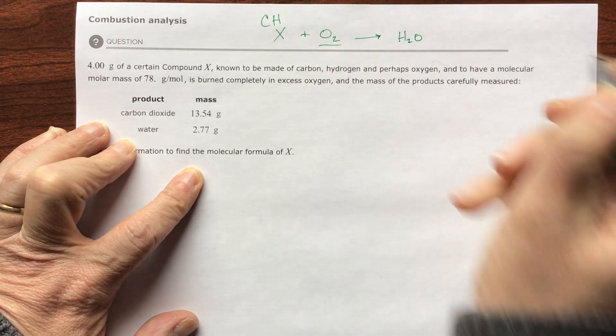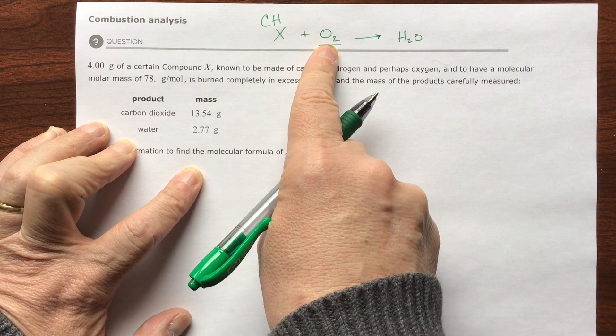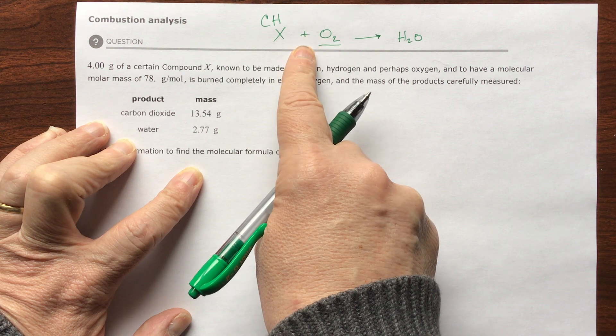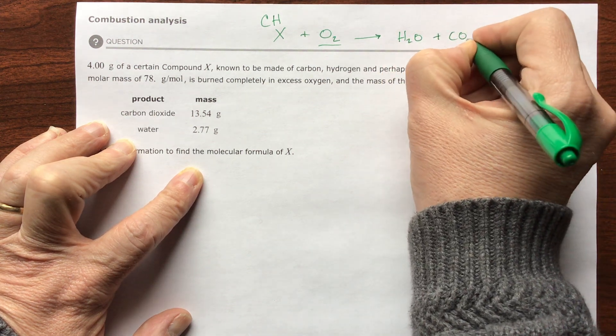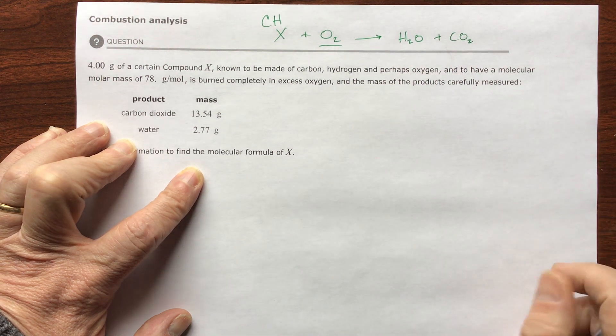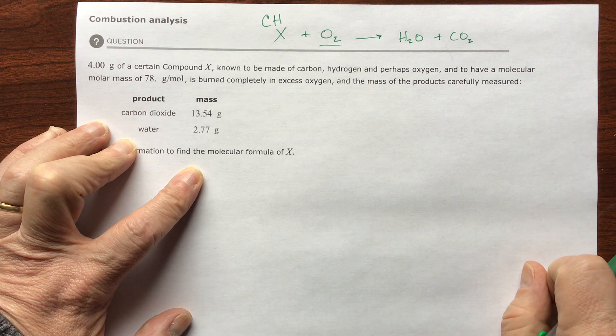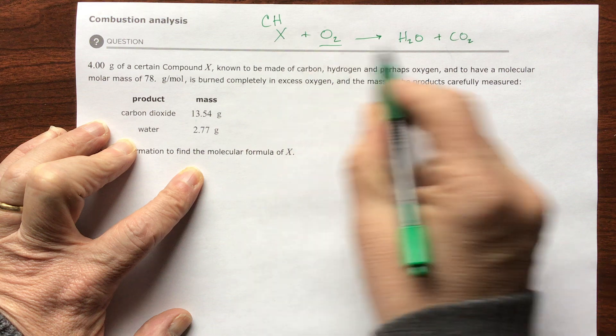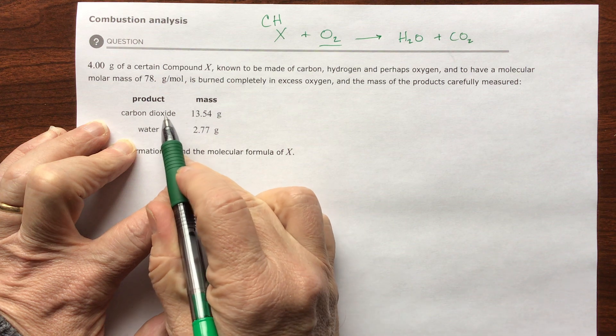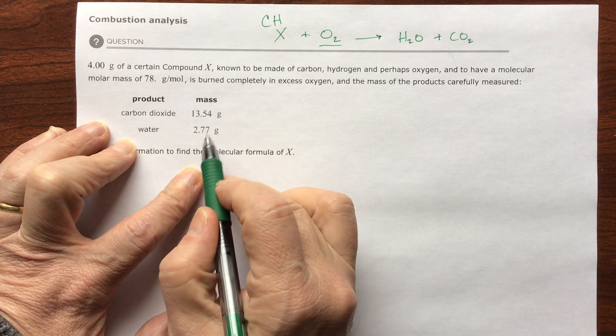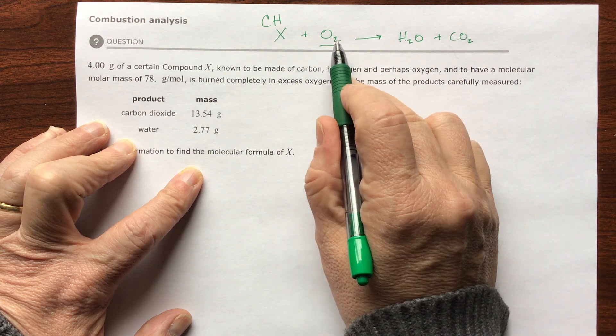Combustion is always going to give you the same products. You're going to get water vapor, plus carbon dioxide gas. So you have two greenhouse gases. That's why people are upset when you burn fossil fuels, because they're hydrocarbons.